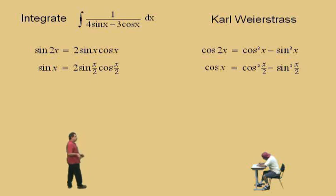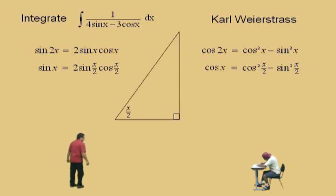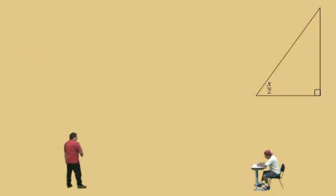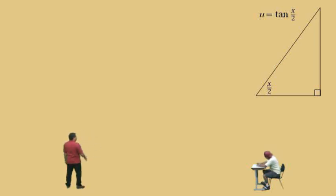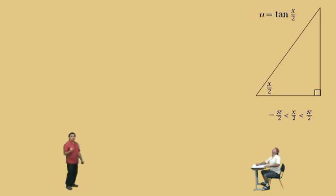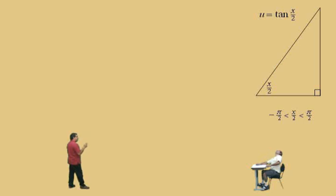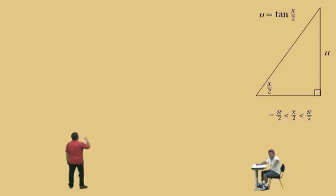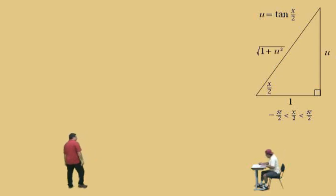Now we're going to develop a reference triangle based on the reference angle x/2. Here's the actual substitution Carl Weierstrass used: let u equal tangent of x/2, with x/2 restricted to quadrants 1 and 4, from −π/2 to π/2. Since tangent is opposite over adjacent, u is opposite to x/2 and 1 is adjacent. The hypotenuse is the square root of 1 plus u squared.